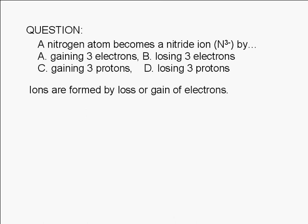Ions are formed by the loss or gain of electrons, not protons. So immediately, we can rule out choices C and D.